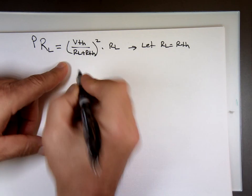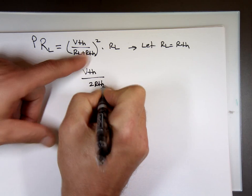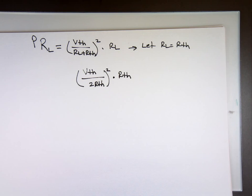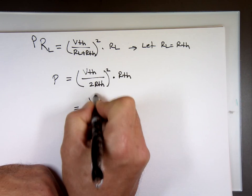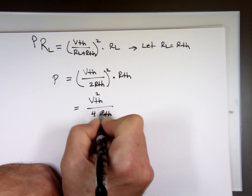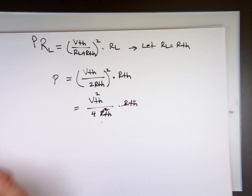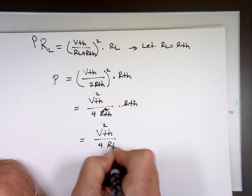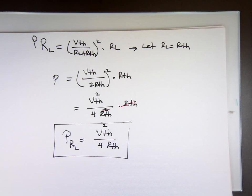V Thevenin. If R sub L equals R Thevenin, we have what? V Thevenin over R Thevenin plus R Thevenin, that's 2R sub Thevenin squared times V Thevenin squared over R Thevenin squared times R Thevenin. So how much power is going to be shipped to that load resistor? The amount of power delivered to that load resistor will be V Thevenin squared divided by 4 times R Thevenin. That's the maximum power transferred to the load.